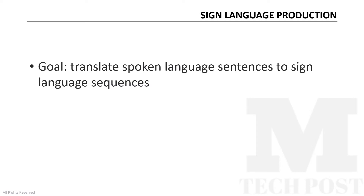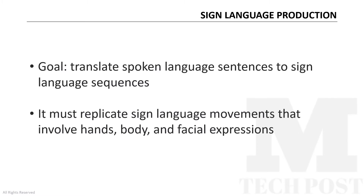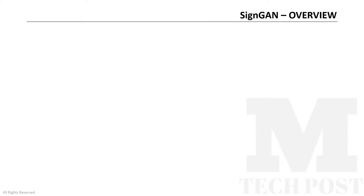The goal of sign language production is the translation of spoken language sentences to sign language sequences. To be truly understandable by deaf communities, the sign language production must replicate the intricate movements of sign languages that involve hands, body and facial expressions. In this paper, the researchers of the University of Surrey propose SignGAN, a sign language production model to produce photorealistic sign language videos from spoken language sentences.